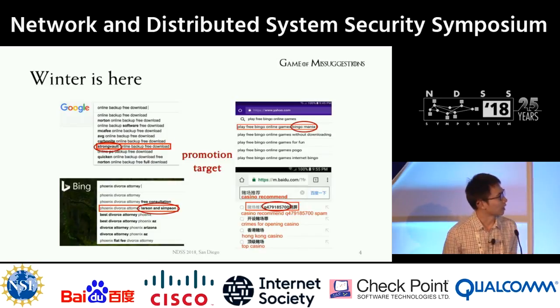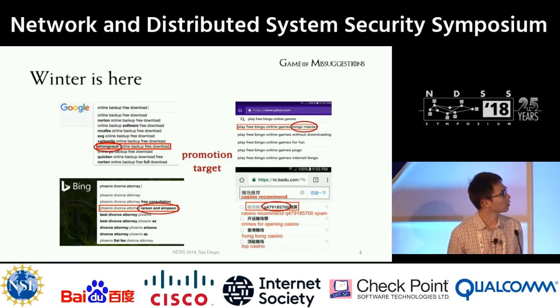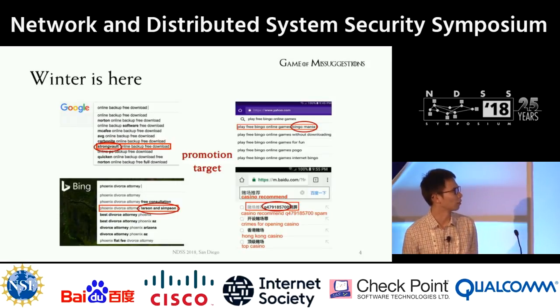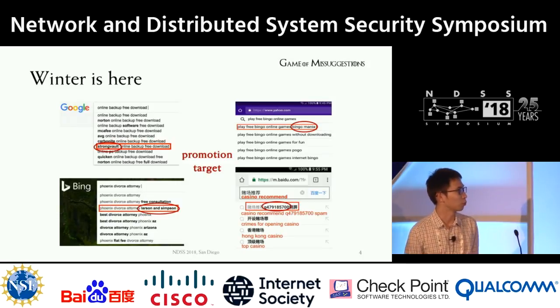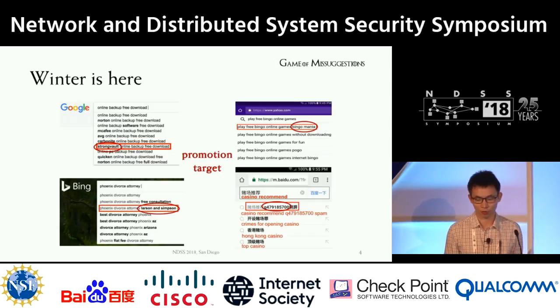For example, in the first picture, the suggestion being triggered here is a link to online backup software, which turned out to be malware. However, it is still being recommended by Google as a popular search.